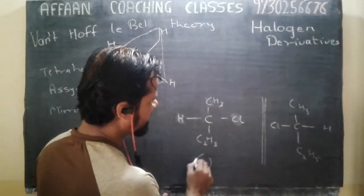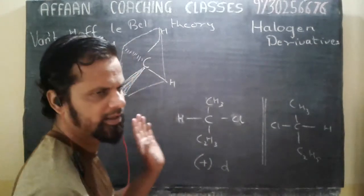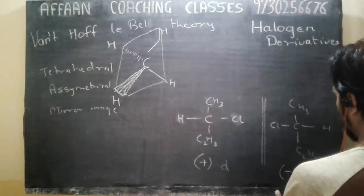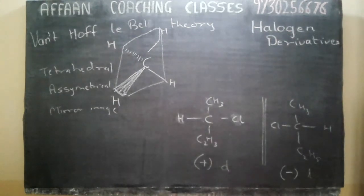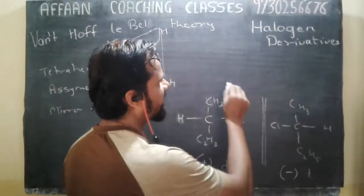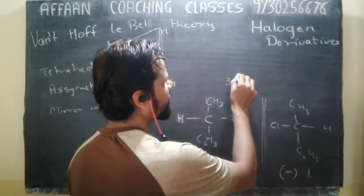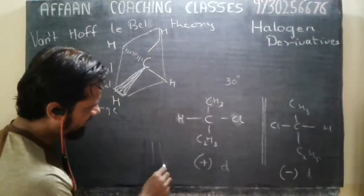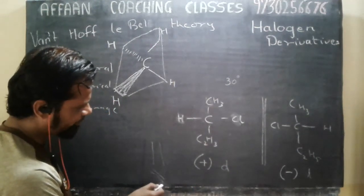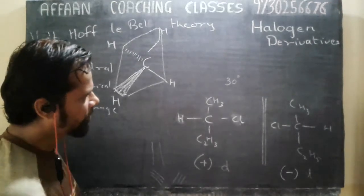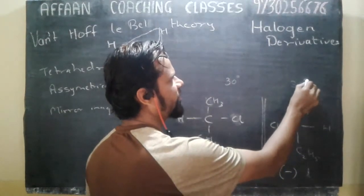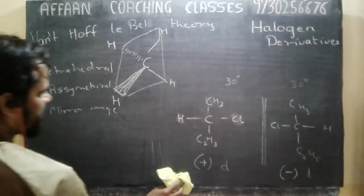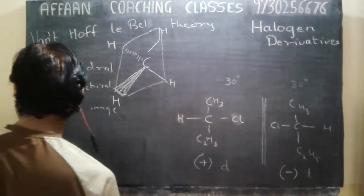If this is rotating to your right, this will rotate the plane-polarized light towards the left hand side. One will rotate the plane-polarized light towards the right hand side — that is the clockwise direction — and the other will rotate it towards the left hand side. But both are the same molecules. So if it is making an angle towards the right hand side, this will make the same angle towards the left hand side. They rotate in opposite directions but will have the same angle.